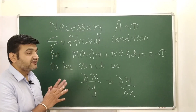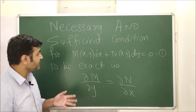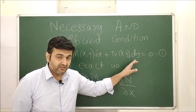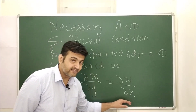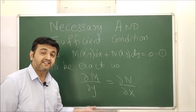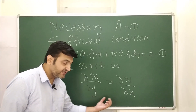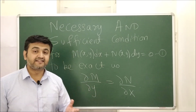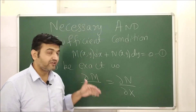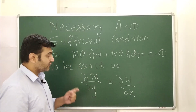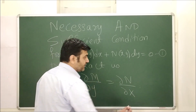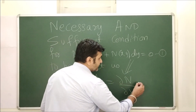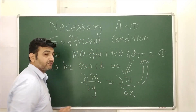Today we are going to see the proof of this theorem. The theorem has two parts: necessary means whenever you have an exact differential equation, this condition must be satisfied. It is also sufficient — if this condition is satisfied, the given differential equation is exact. So this is an if-and-only-if statement. First we'll prove equation 1 implies the condition, then we'll prove the condition implies equation 1.